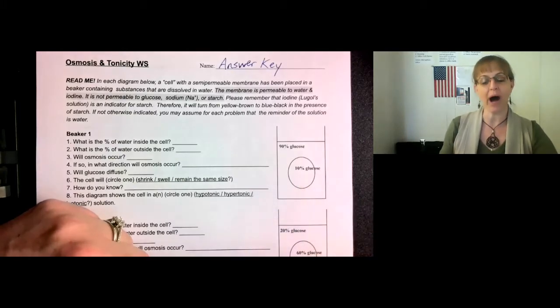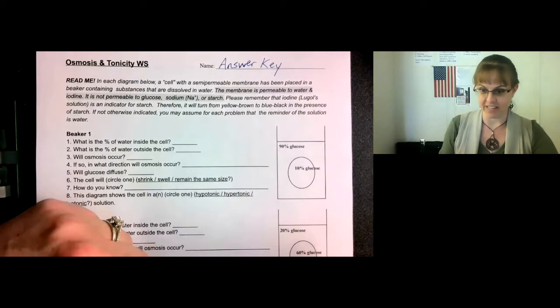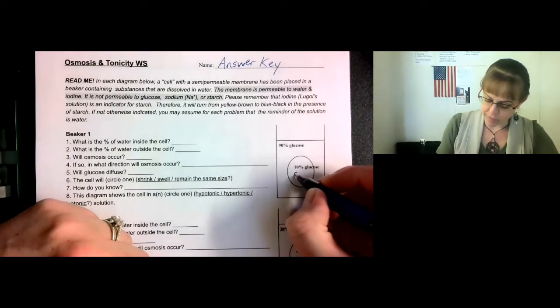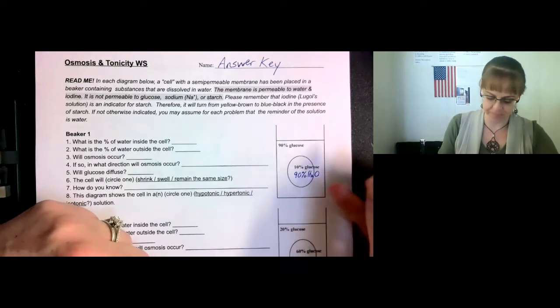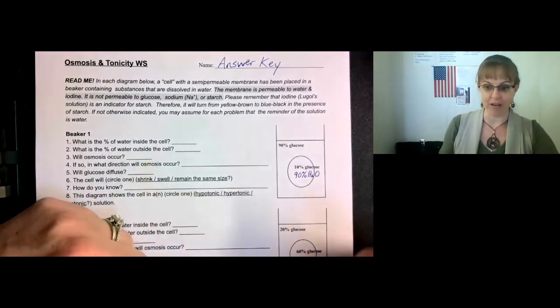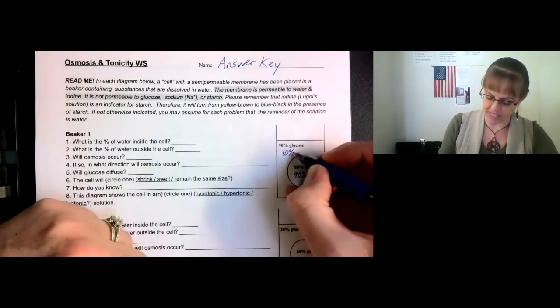What's the percent of water inside the cell? They said the rest is water if it didn't say anything else. So if we have 10% glucose, we must have 90% water in the cell. And the percent of water outside the cell, if it's 90% glucose, it must be 10% water.